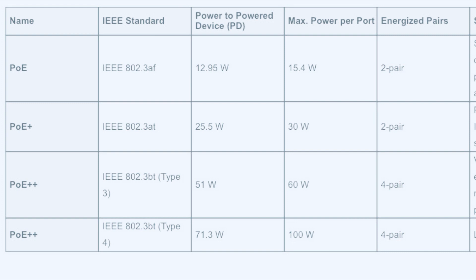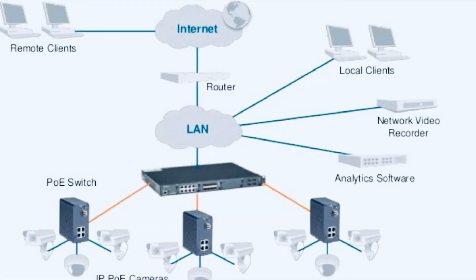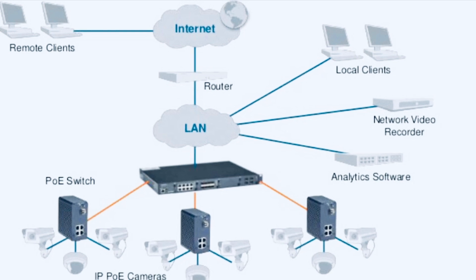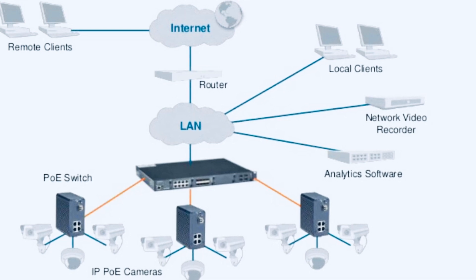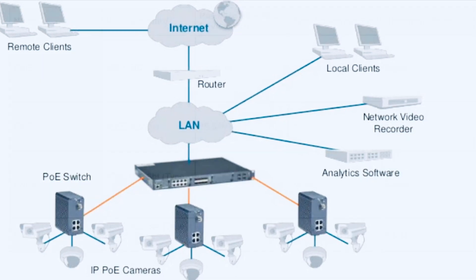With the new IEEE 802.3bt standard came two more options — Type 3 and Type 4. Type 3 is also called 4-Pair Power over Ethernet (4PPoE), PoE Plus Plus, or Universal Power over Ethernet (UPoE). It provides 60 watts of power per port and is ideal for video conferencing equipment, multi-radio wireless access points, PTZ cameras, and building management devices.